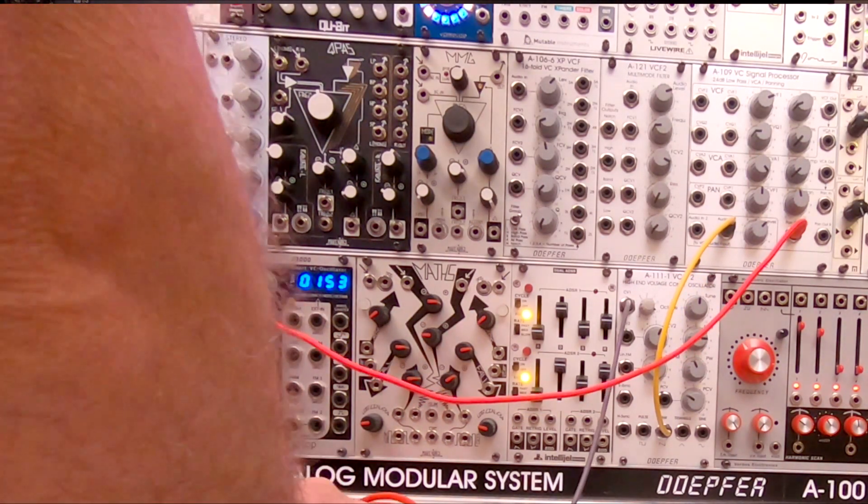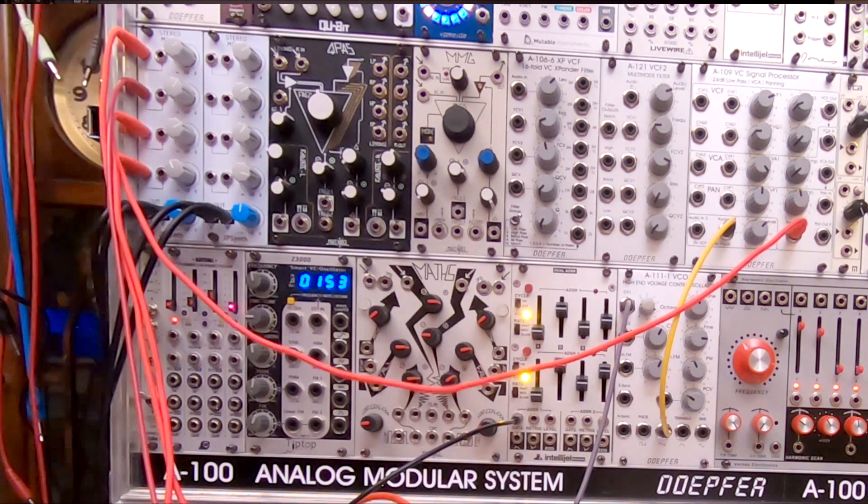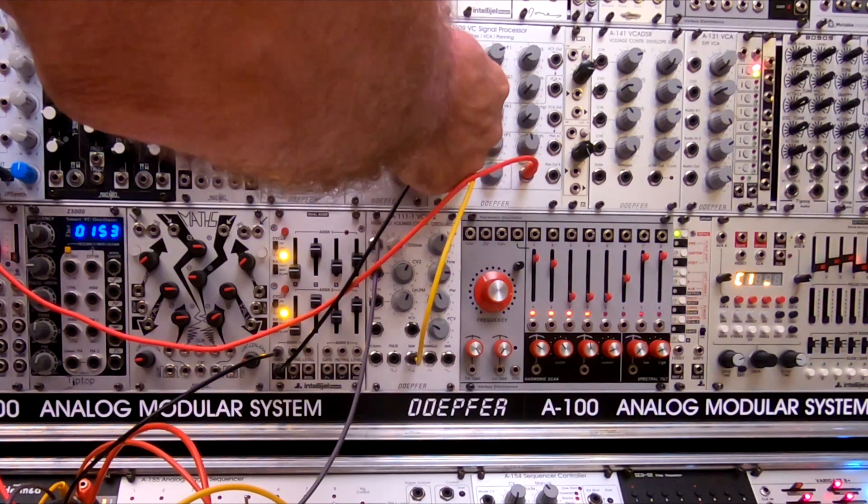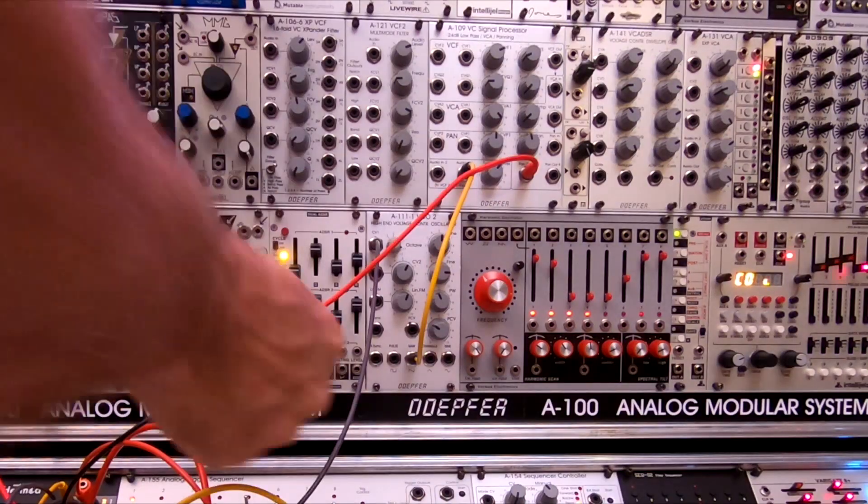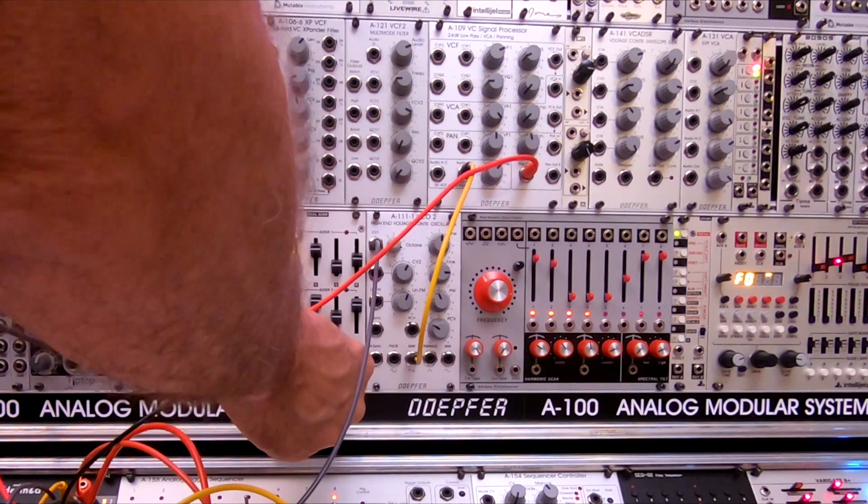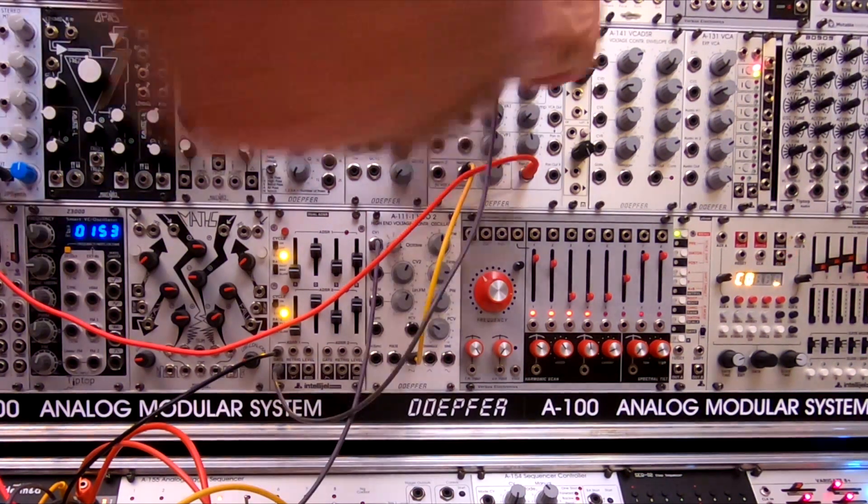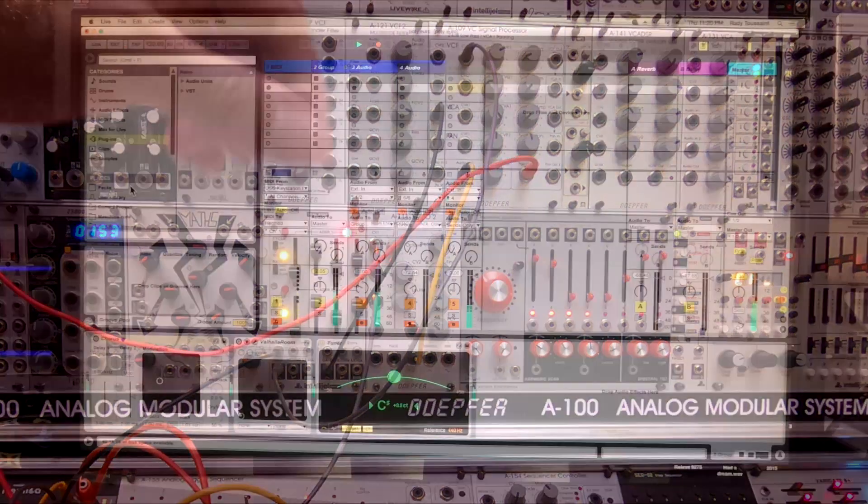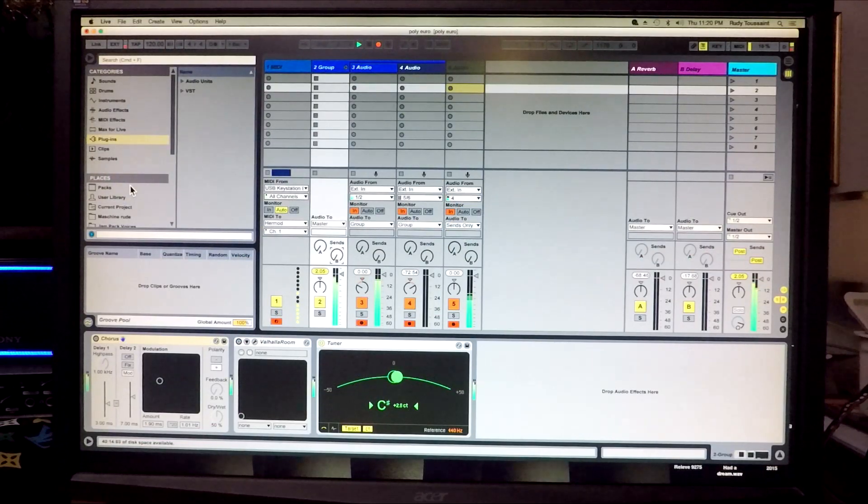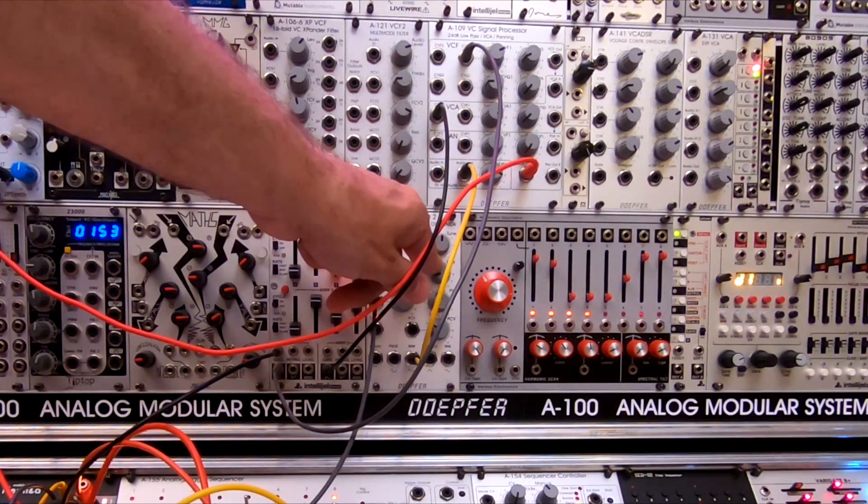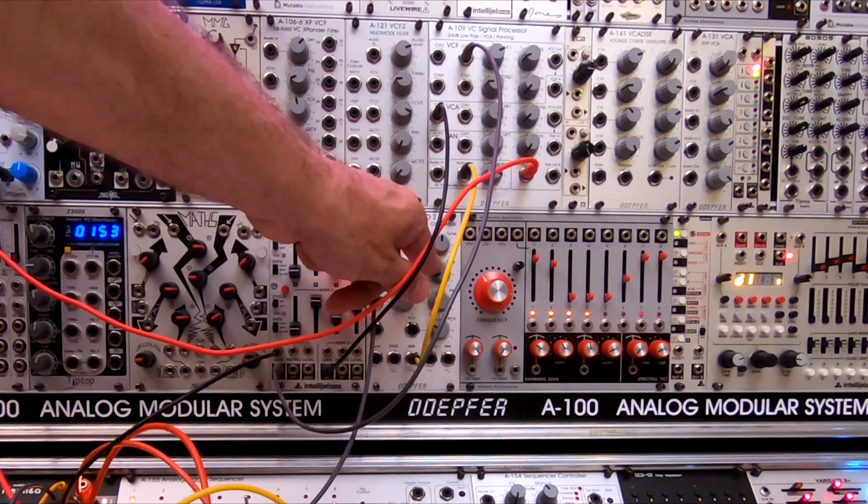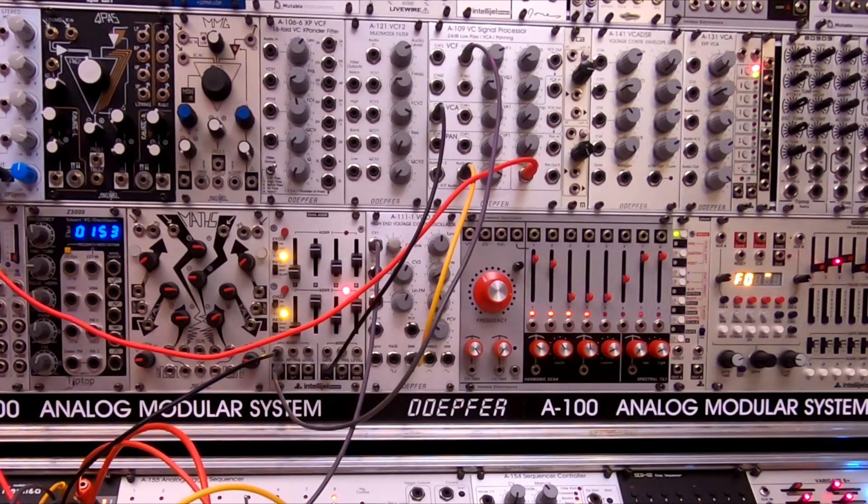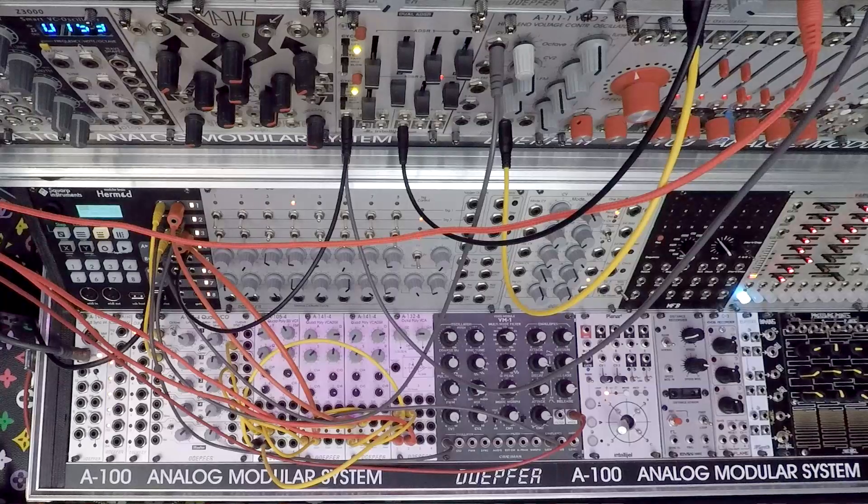So from gate number 4 into the dual ADSR from Intellijel. Now I can take output here. I'm going to go into the VCF. I always take the first ADSR for the filter and then the second one for the VCA. So second. Okay, do I have a note? Tune it to a C. There's a nice distortion in this thing. Now I have a 4 oscillator unison.